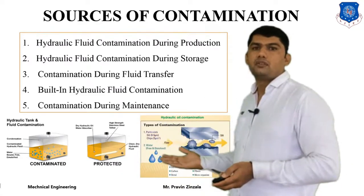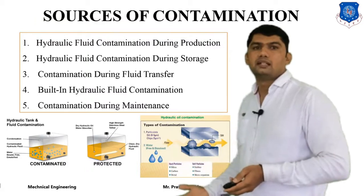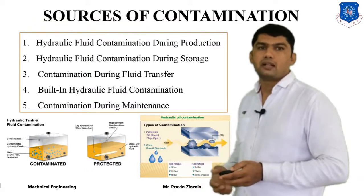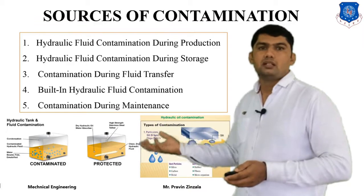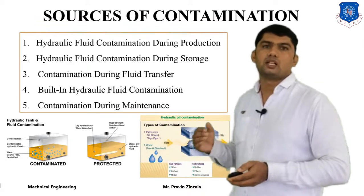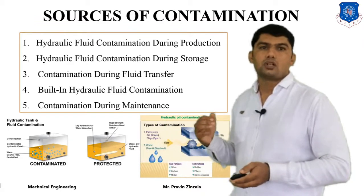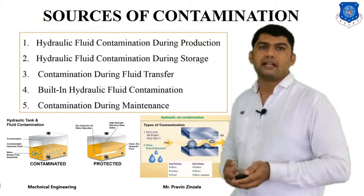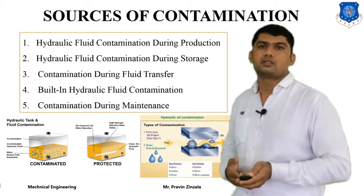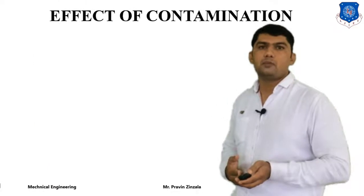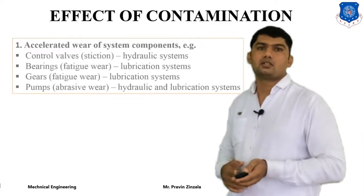Different types of contaminants — solid, liquid, and gaseous — such as suspended particles and solid particles can occur during operation, process, transportation, storage, and throughout the life cycle of the system. The effects of contaminants on hydraulic systems include wear of system components.